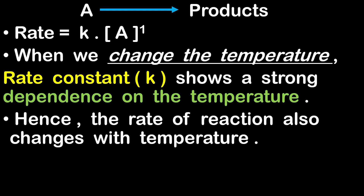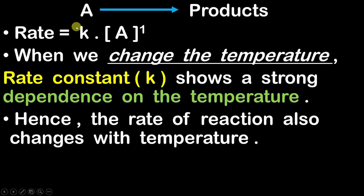Why does the rate of the reaction change? It is obvious that when the value of the rate constant changes with temperature, then the rate of the reaction is also going to change, because the rate of the reaction depends on the rate constant K. We have understood that K changes with temperature, but we do not know exactly how the rate constant varies with temperature.